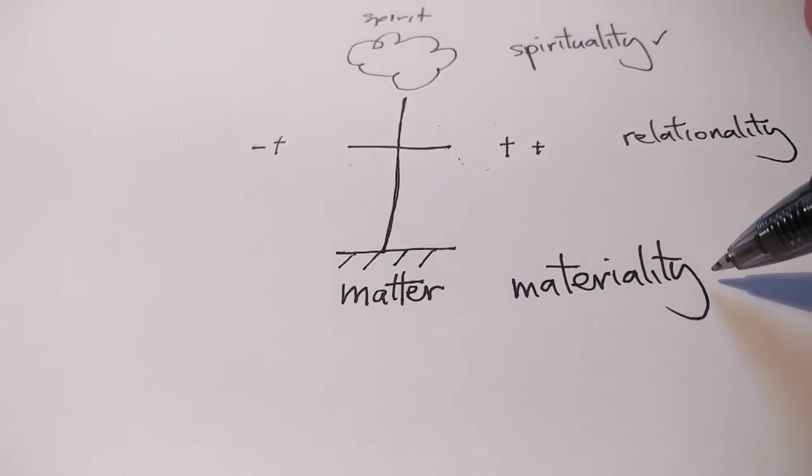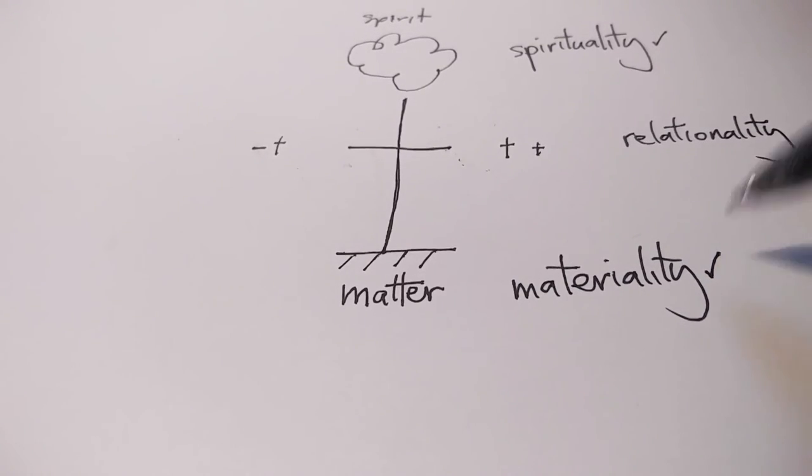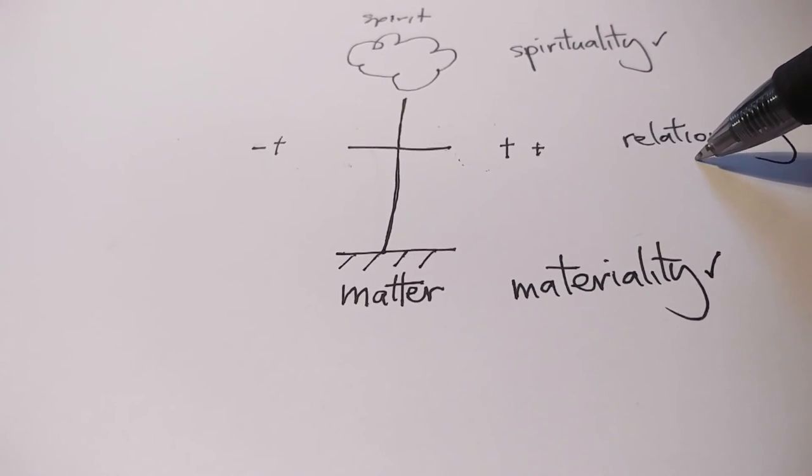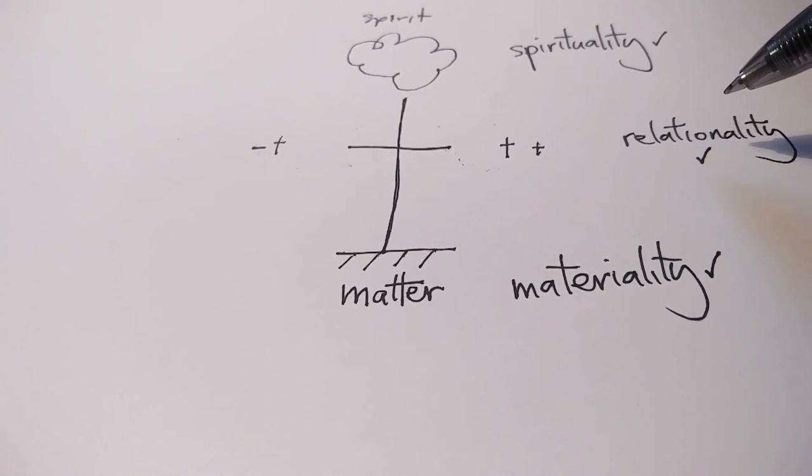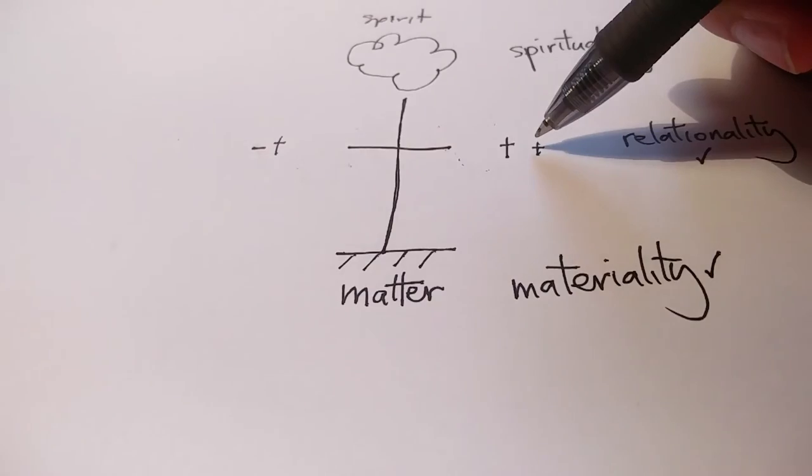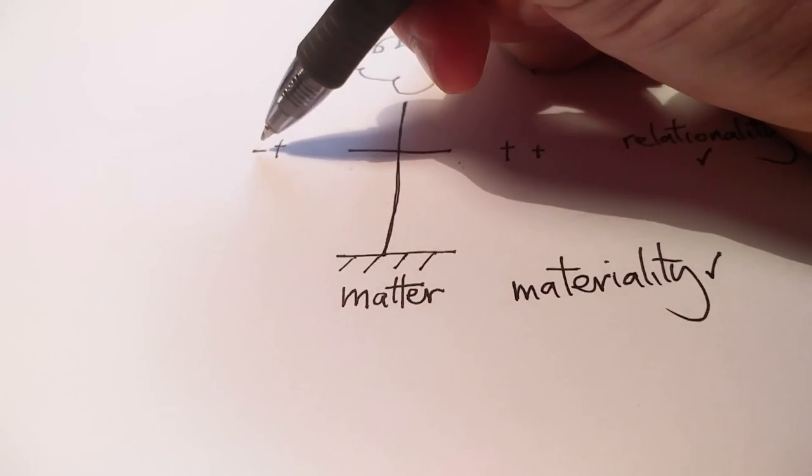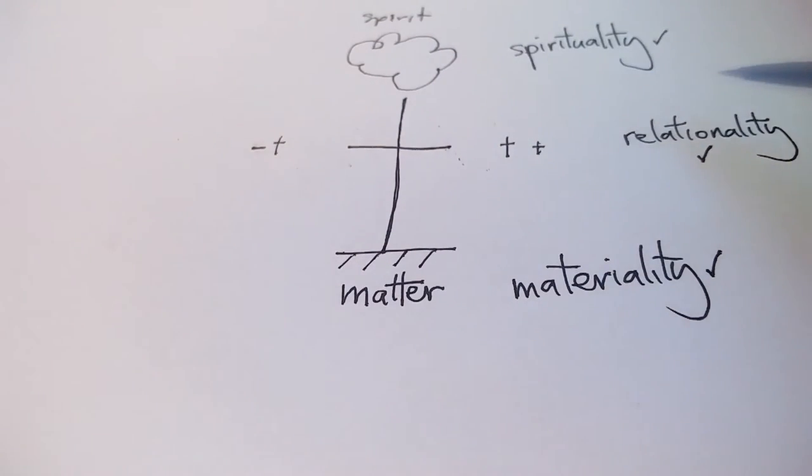Materiality, your relationship with the world around you including everything that money can buy. And relationality, your relationships with all the people around you, those who make you happy, those who make you upset.